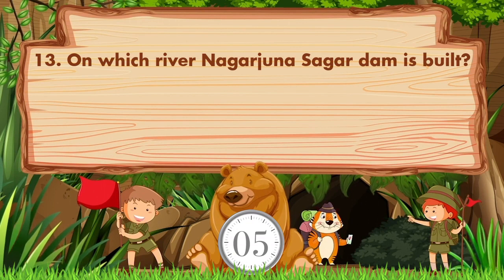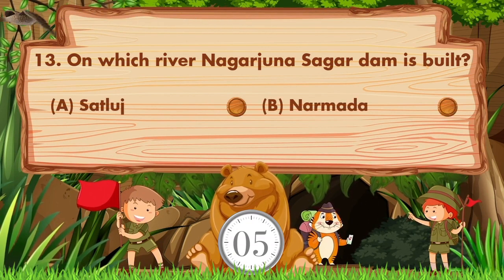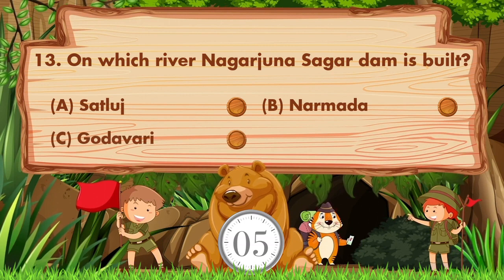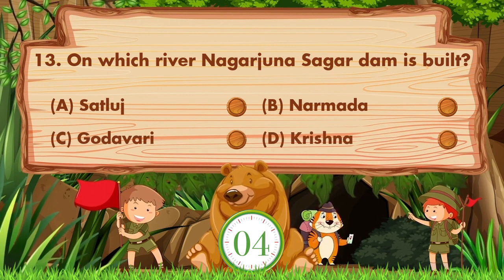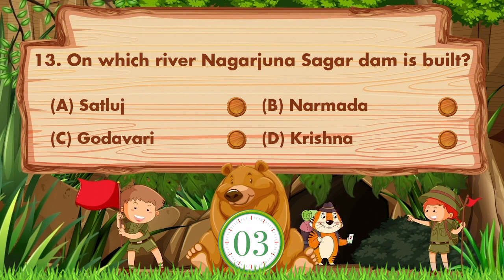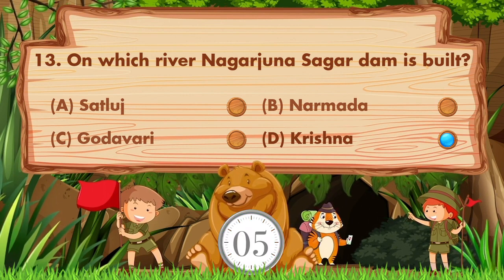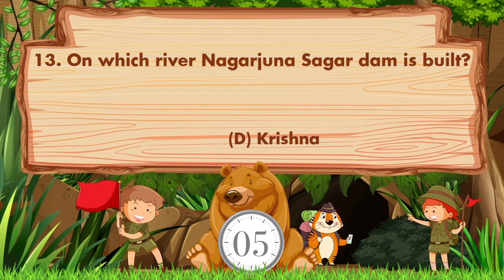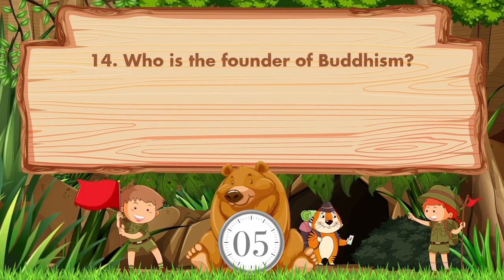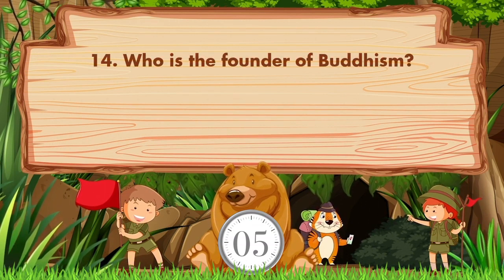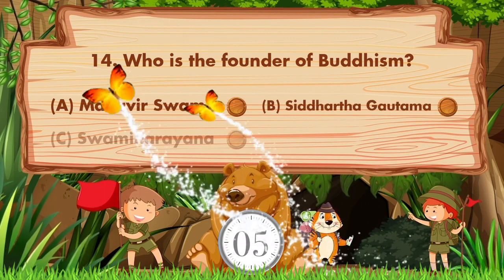On which river is the Nagarjuna Sagar dam built? Option A is Satluj, B is Narmada, C is Godavari, D is Krishna. The answer is option D, Krishna.